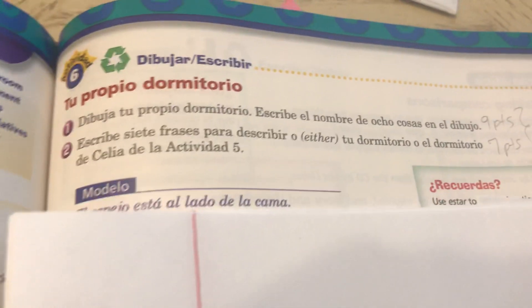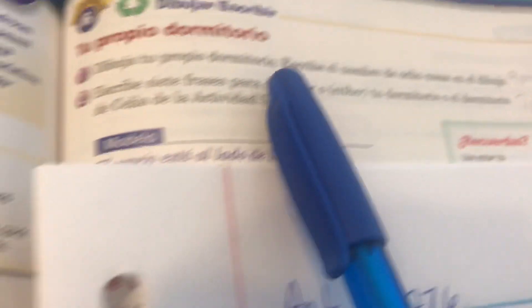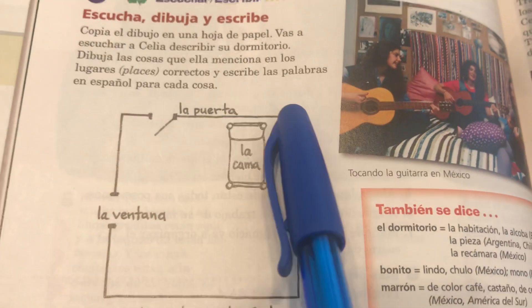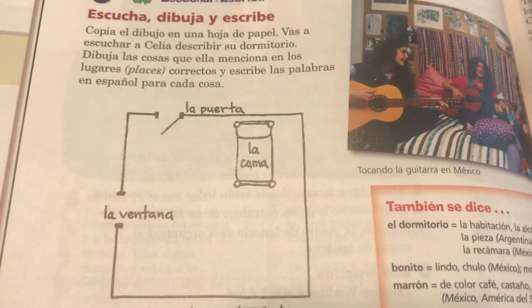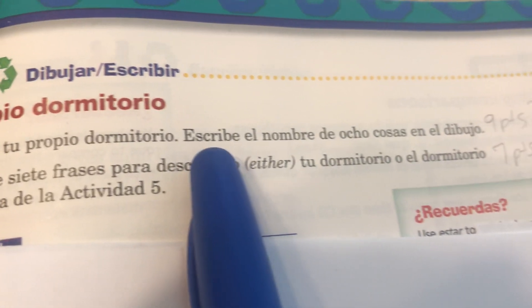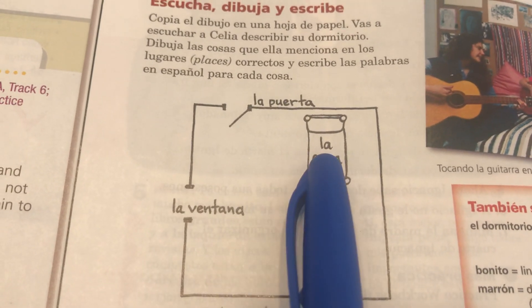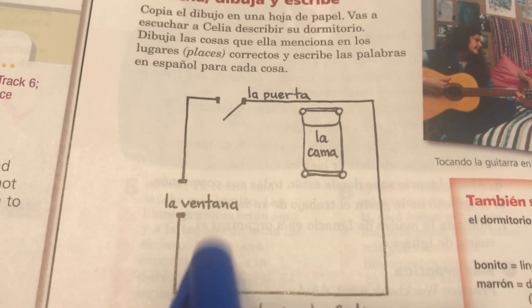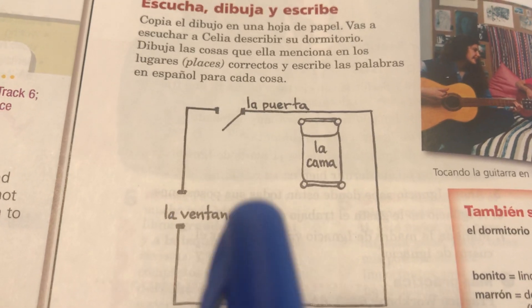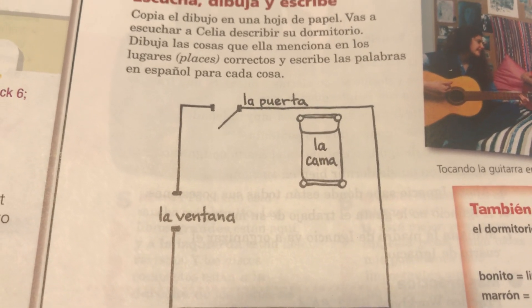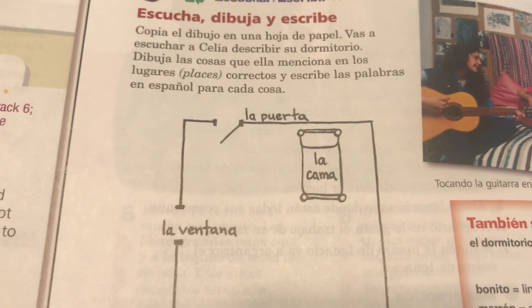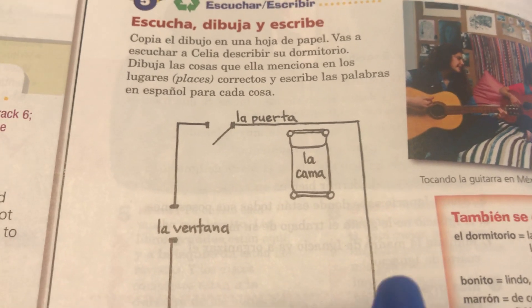Now let's look at Actividad 6. It says activity 6, and it says to draw your own bedroom. We didn't do this in class — you're going to do this right now. You're going to draw the square, and then write down the names of 8 things in the drawing. You can have the bed, a dresser, a lamp, a nightstand. It's not going to be for a grade, but I do want to see them in class on Monday. Those of you who watch the video will be turning this in on Monday, and I'll know who doesn't watch this video.